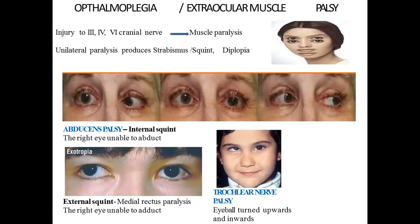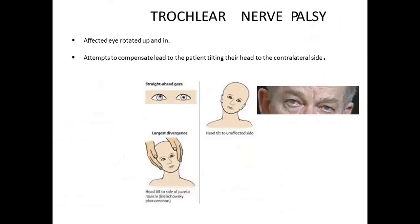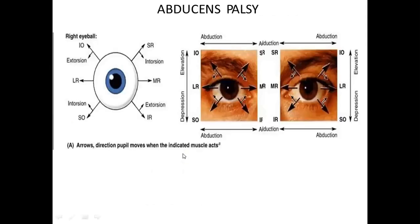Trochlear nerve palsy (CN IV): the eyeball is turned upwards and inwards, as can be seen in the diagram. This occurs because of fourth cranial nerve (trochlear nerve) palsy. The affected eye shows upward and inward deviation — you can observe this condition clinically.